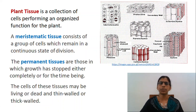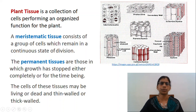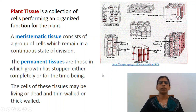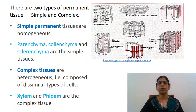Each plant tissue is specialized for a unique purpose and can be combined with other tissues to create organs such as leaves, flowers, stems and roots. A meristematic tissue consists of a group of cells which remain in continuous state of division. The permanent tissues are those in which growth has stopped either completely or for the time being. Sometimes they again become meristematic partially or wholly. The cells of these tissues may be living or dead, and thin-walled or thick-walled. The thin-walled permanent tissues are generally living whereas the thick-walled tissues may be living or dead. There are two types of permanent tissues, that is simple and complex.